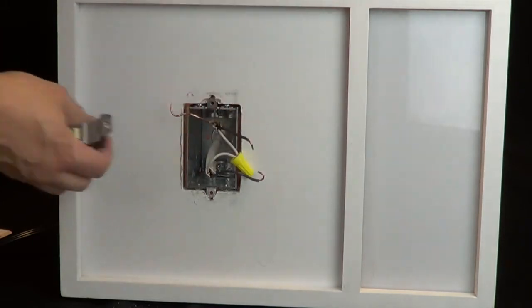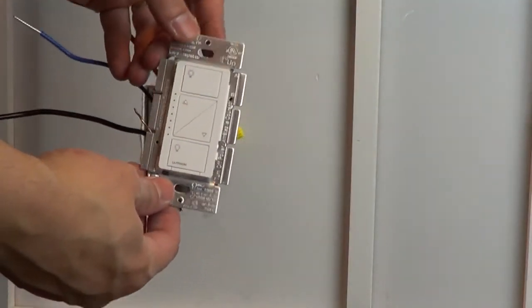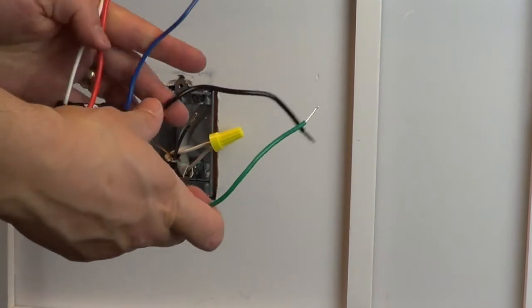In this video, we're using a Caseta Pro dimmer, however these instructions apply to other products that have the same color wires.